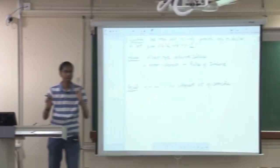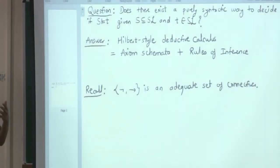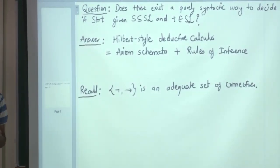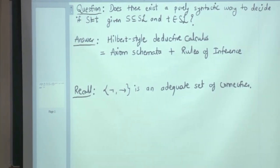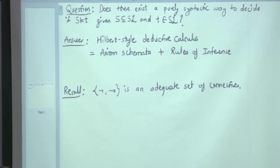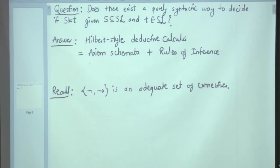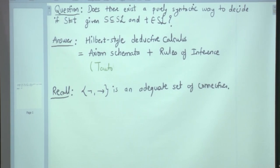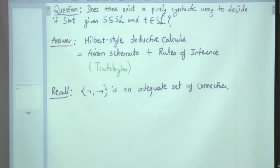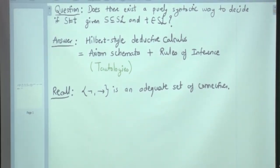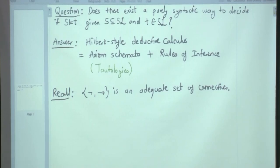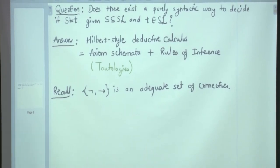So what is calculus? Calculus is a set of rules and some axioms. Axioms are those statements which we do not question. In this case, these are axiom schemata — I am using the word schemata because there are different schemes and they themselves have variables in them. You have to verify, once I start writing down these axiom schemes, that these are all tautologies. Nobody will have any objections in accepting tautologies as axioms, because they are always true.